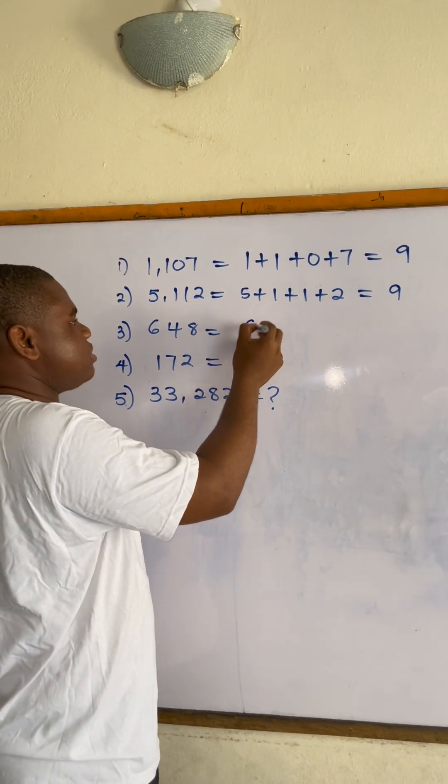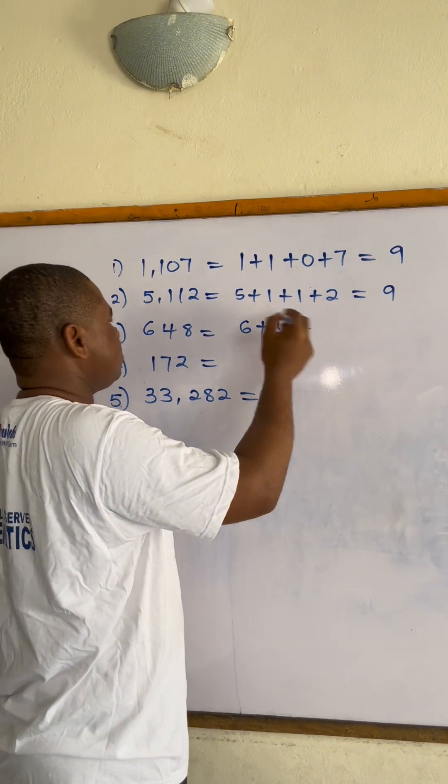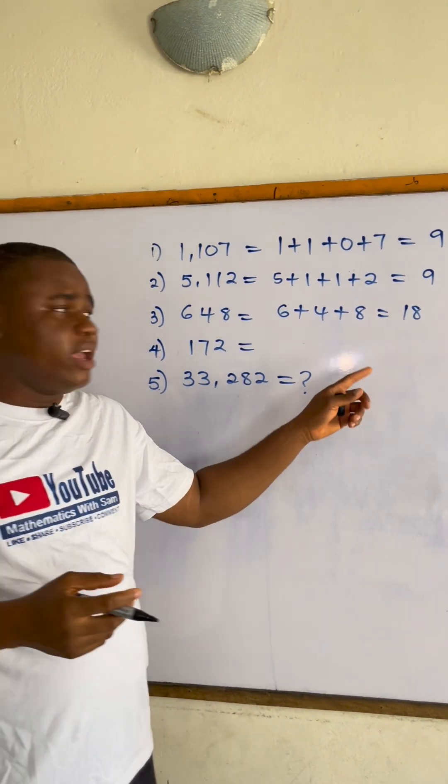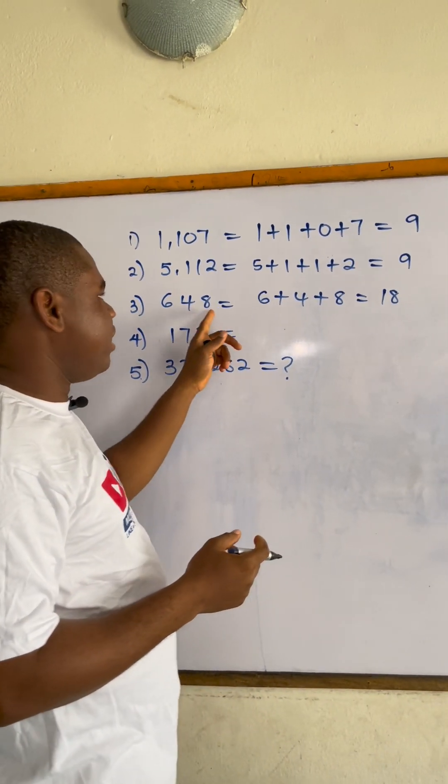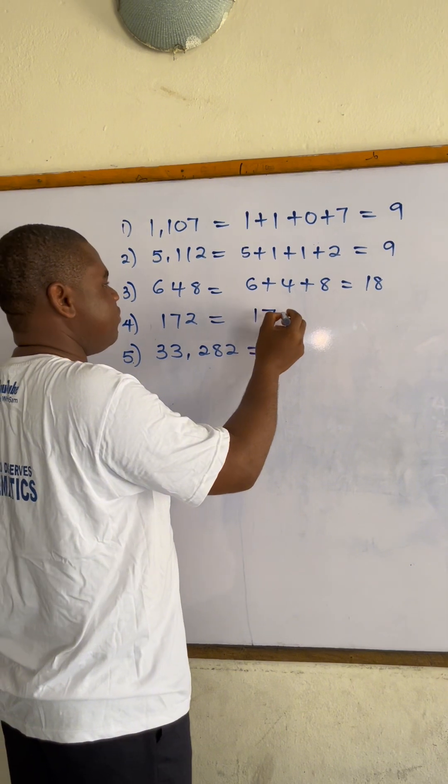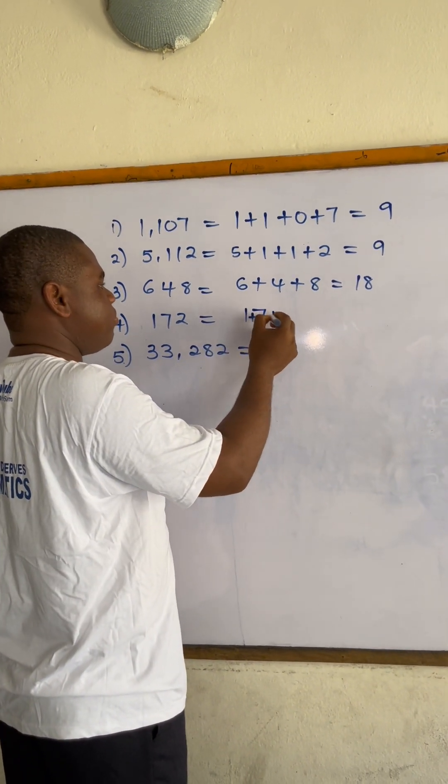The next one: we have 6 plus 4 plus 8, which equals 18. Since 18 is a multiple of 9, it means that this number 648 is divisible by 9. The next one is 1 plus 7 plus...